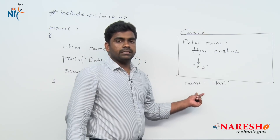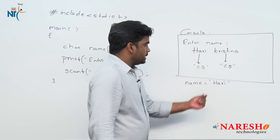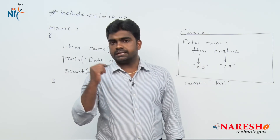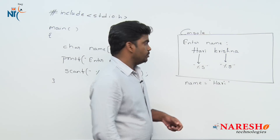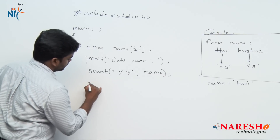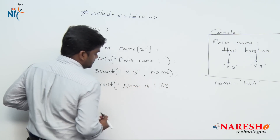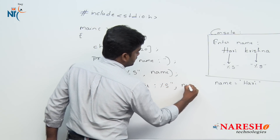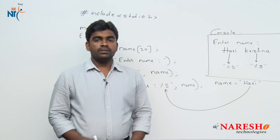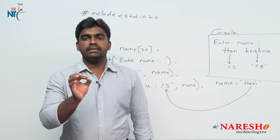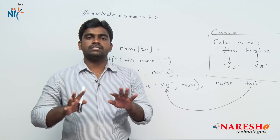It will collect only 'Hari'. It is looking for a second %s to read 'Krishna', but we provided only one %s format specifier in scanf. So only 'Hari' is collected and 'Krishna' is omitted. Later when we print using printf with %s, it will print only 'Hari'. So using %s we can read only single-word strings; multi-word strings are impossible to read with scanf.